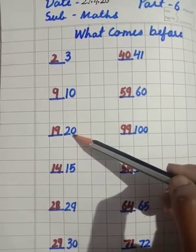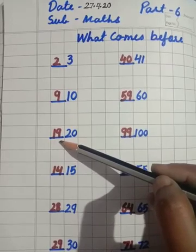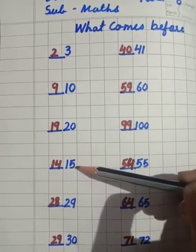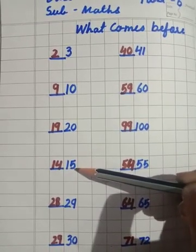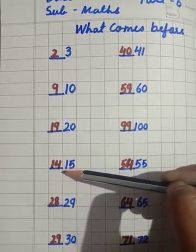Twenty comes before. Twenty se pahele kaunsa number aata hai? Nineteen. Fifteen comes before. Fifteen se pahele kaunsa number aata hai? Fourteen.